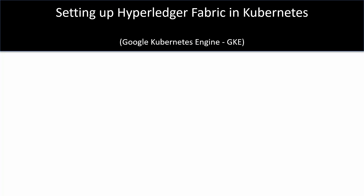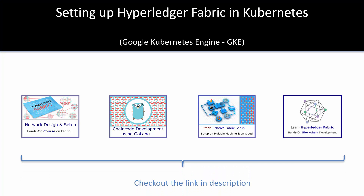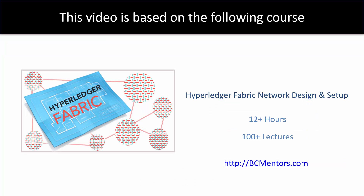Setting up Hyperledger Fabric in Kubernetes. I am the author of multiple courses on Hyperledger Fabric. In this video I'll demonstrate how you can set up a Hyperledger Fabric network in a Kubernetes cluster. For demo purposes I'm going to use Google Kubernetes Engine. I've put together this video using parts of lectures from my course Hyperledger Fabric Network Design and Setup, which provides guidance for setting up Hyperledger Fabric using native mode, Docker, and Kubernetes.